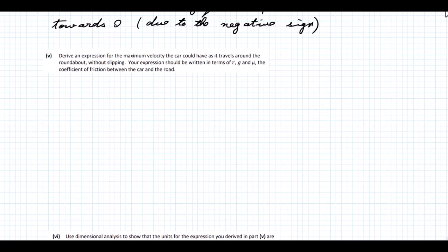Derive an expression for the maximum velocity the car could have as it travels around the roundabout without slipping. Your expression should be written in terms of R, g, and mu, the coefficient of friction between the car and the road. If we draw a sketch, we have our car with Mg down and normal reaction up. In this direction, we have friction, that's mu R.